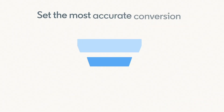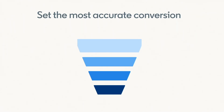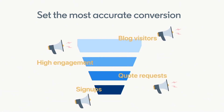2. Set the most accurate conversion for each campaign. Select the exact actions you expect buyers to perform. Using the right conversion will help you optimize and better measure your campaigns.